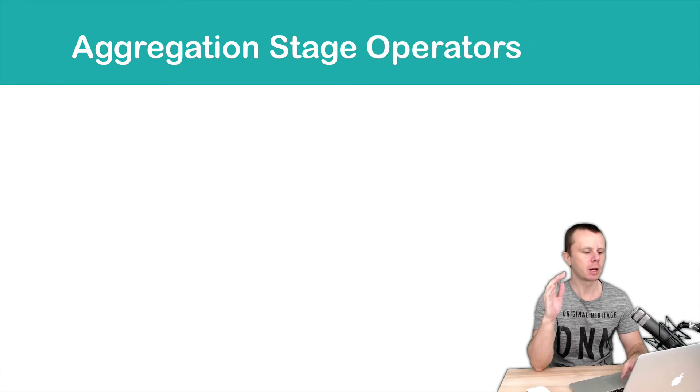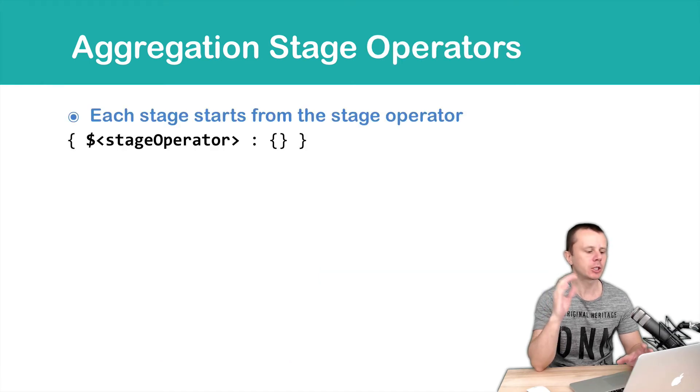Let's look at the stage operators. Each stage starts from the stage operator, prepended by dollar sign, and then comes an object. Let's look at the examples.